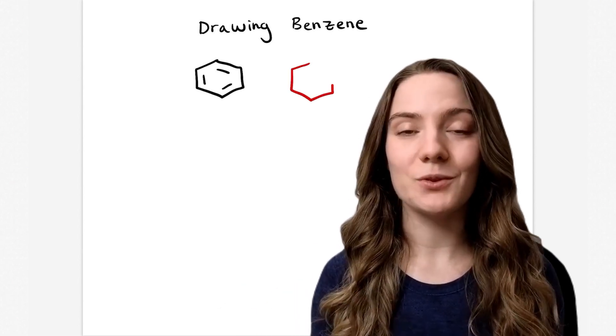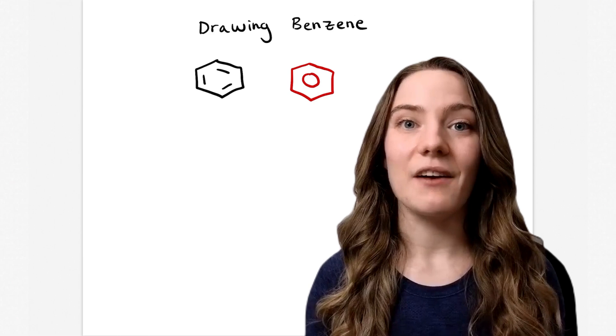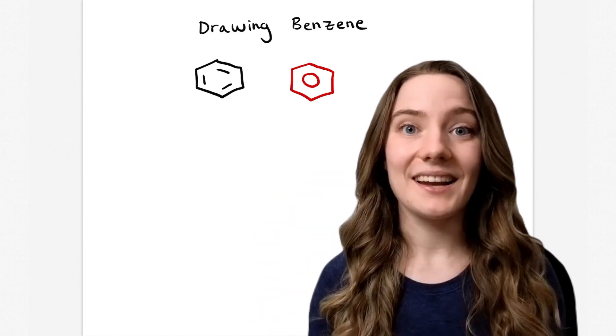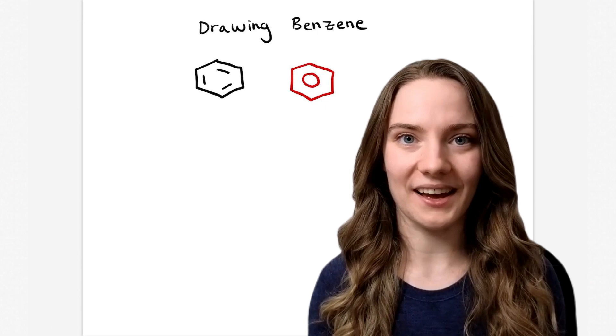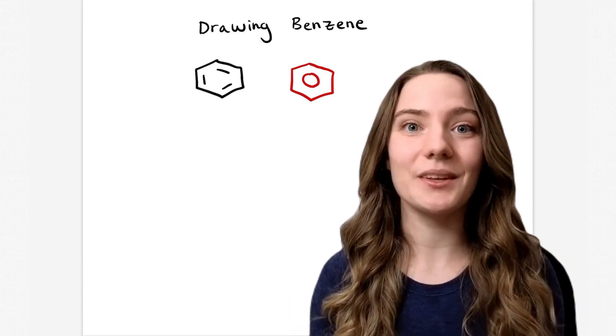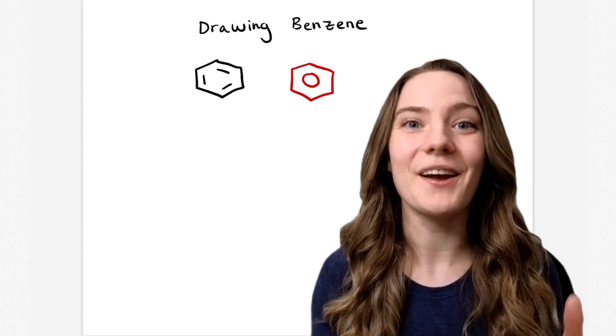You may also see people draw benzene like this. I've replaced the double bonds with the circle in the middle, and now I never draw benzene like that. My professors actually hated that structure and told us to never draw benzene with the circle.